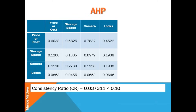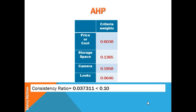We may continue with the process of decision making using AHP. Based on the requirement of the buyer, these criteria weights can be used for further calculation. You can see that price has been given 60% weightage, storage space 13.65%, camera 19.58%, and looks a weightage of 6.46%. Thank you and have a nice day.